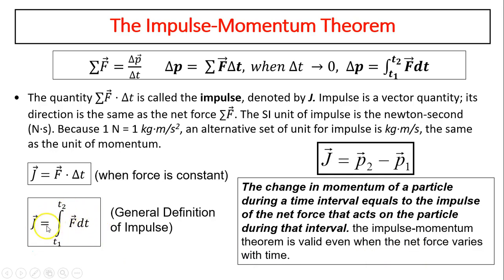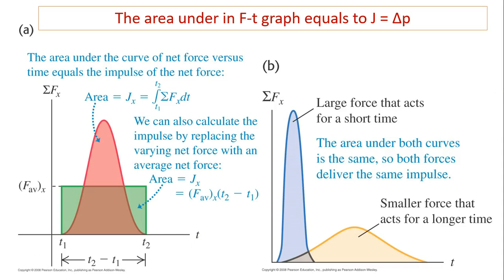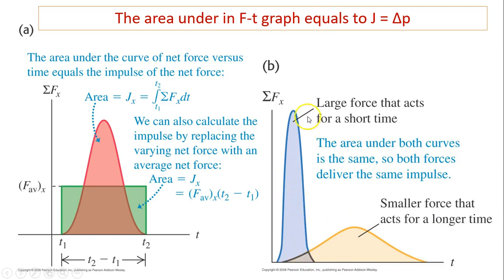When a force changes with time, the integral still equals p2 minus p1. The area under an F-t graph equals the impulse, because impulse is force times time. So in a force-versus-time graph, the area equals impulse. We can also calculate impulse by replacing the varying net force with the average net force. Both areas are the same — a larger force acting for a short time produces the same impulse as a smaller force acting over a longer time.